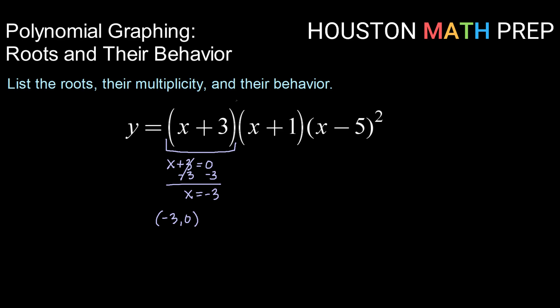Now checking for the multiplicity, we know multiplicity comes from the power of that factor. In this case, since we don't see any, we know that it is an understood multiplicity of 1. And because we have an odd multiplicity, you know that odd multiplicity means that our behavior will be to cross the x-axis.